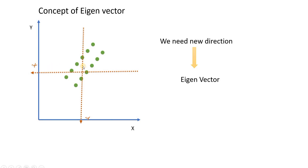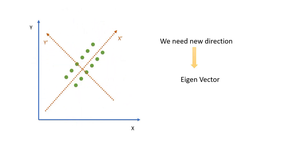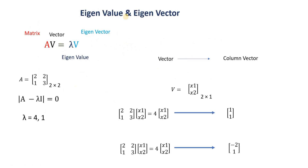Let's talk about the concept of eigenvectors. When we try to find a new dimension to represent the data set, there could be infinite orientations. The eigenvector helps us find the exact orientation so that the maximum data variance is captured along Principal Component 1 and so on. Mathematically, for a matrix A, we find eigenvector v such that A·v equals lambda times v, where lambda is the eigenvalue.